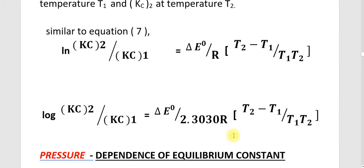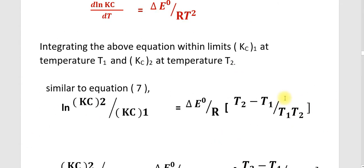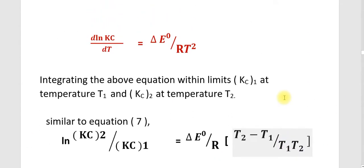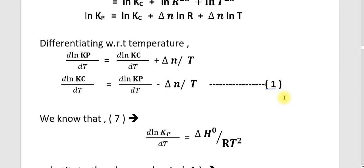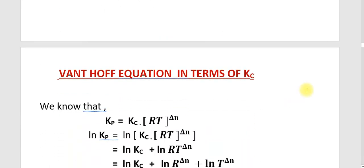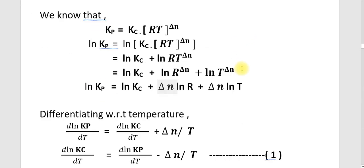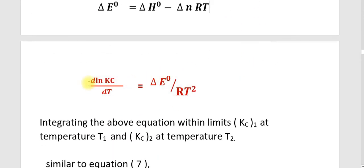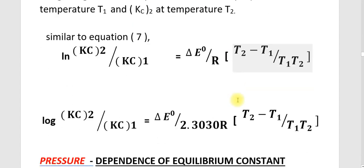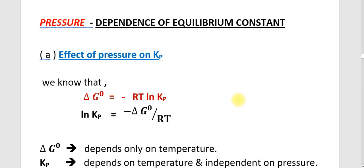The equation has already been explained here. That is the relationship between the Van't Hoff equation written in terms of Kc. The main equation is: d(Ln Kc)/dT equals delta E° by RT². I think it is clear. We are now entering into the next section.